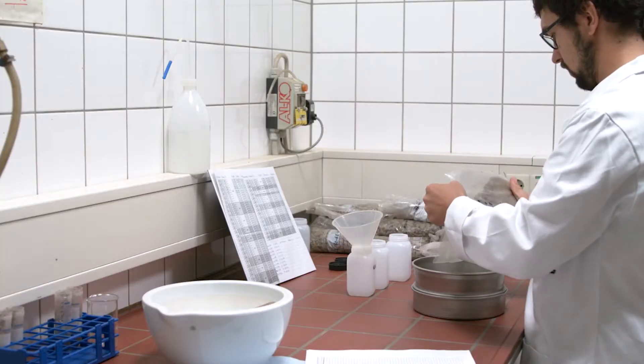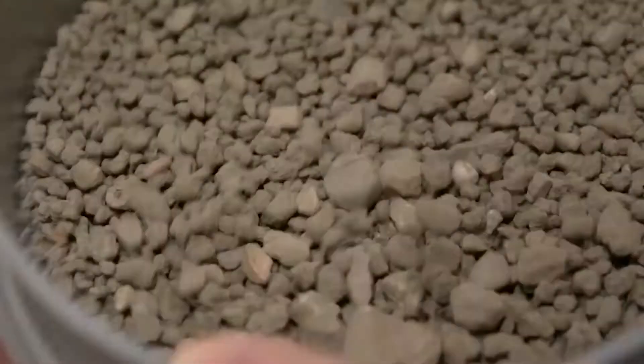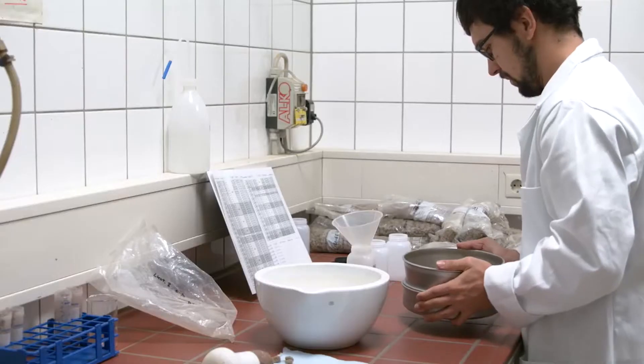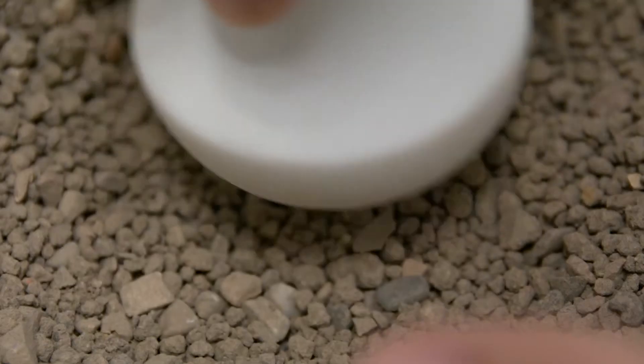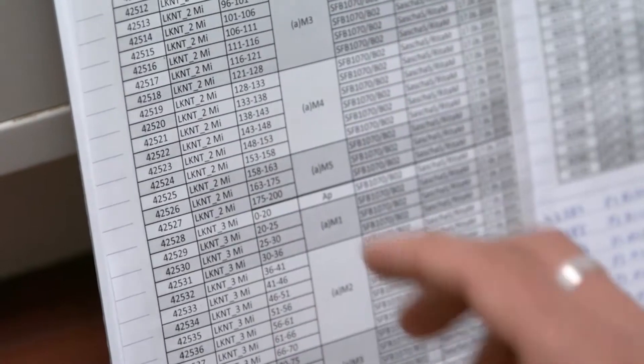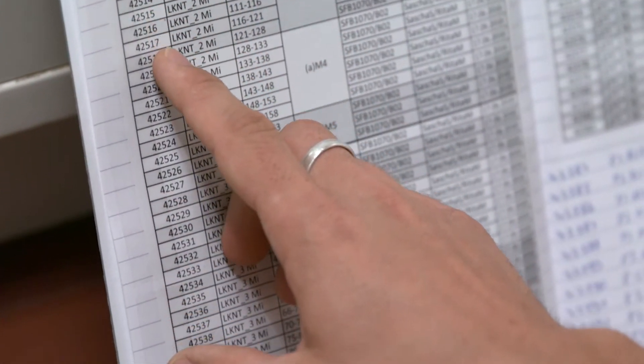Packed in sealed bags, the soil samples are brought from the site to the laboratory. There they are stored and prepared for analysis. Preparation usually involves drying and sifting the material. The samples also get lab numbers to ensure exact identification.